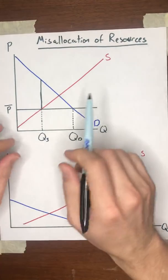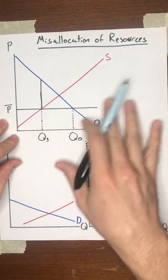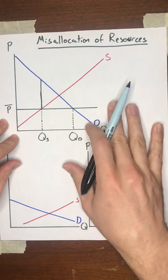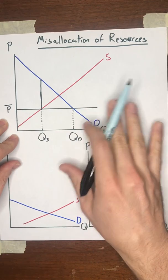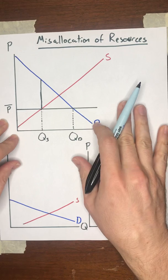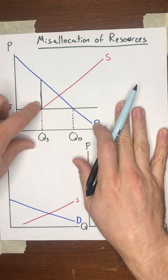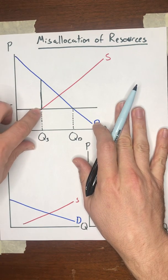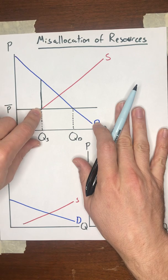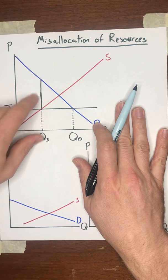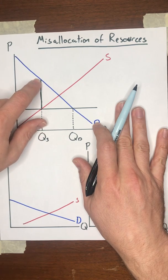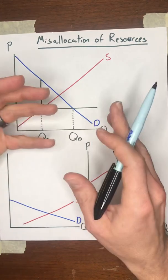Now, let's consider what might happen if there are no black markets, there's no bribes, and let's also imagine that buyers don't compete with each other by waiting in long lines. Or at least the amount of time they spend waiting in line doesn't correspond with their willingness to pay.